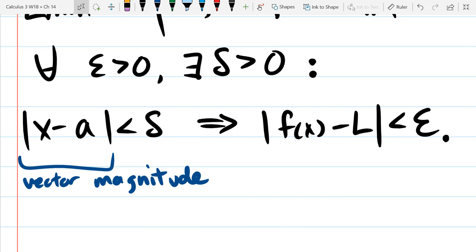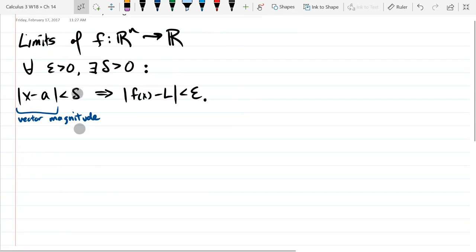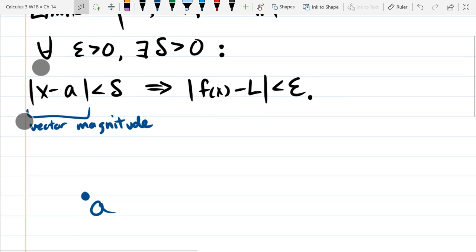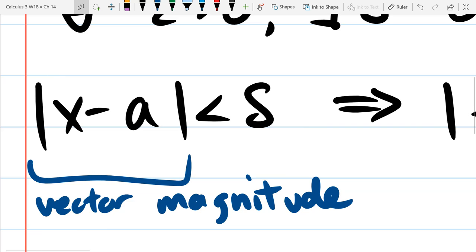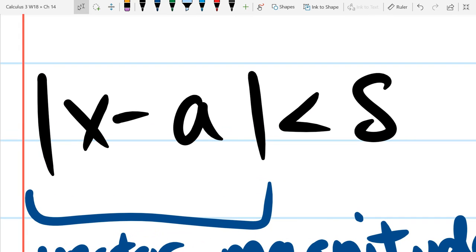So the definition stays exactly the same. If your x is close to a. The only difference is a and x are now vectors. What is one way to describe every vector that satisfies this property? Every vector x that satisfies this property.